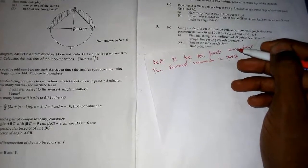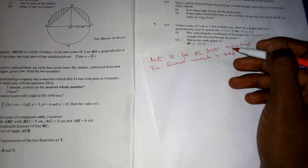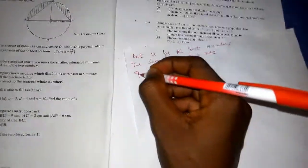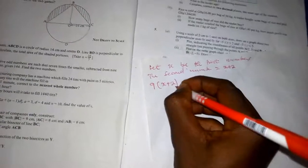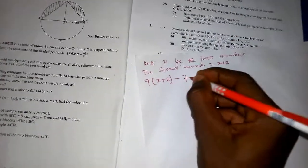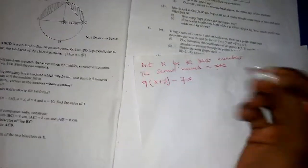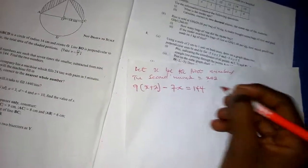So nine times the bigger number is nine times (X + 2) minus seven X equals 144. Now let us expand this linear equation involving brackets.